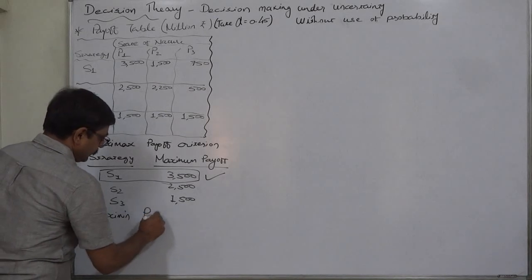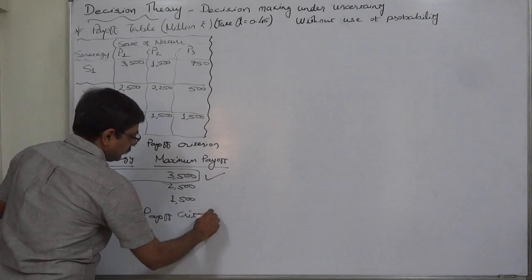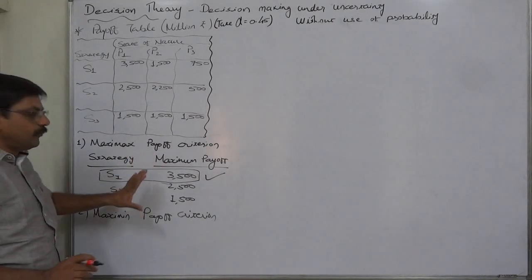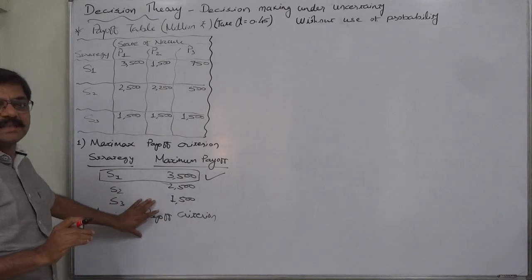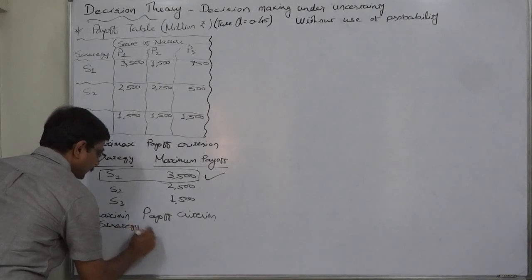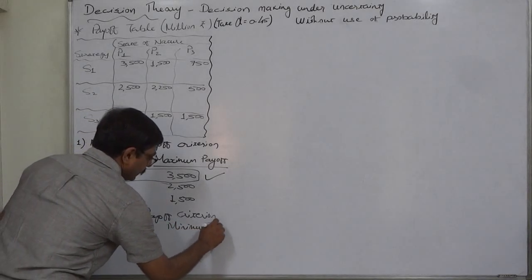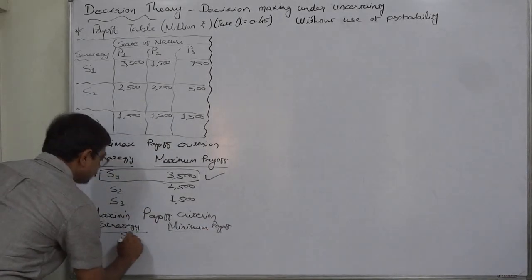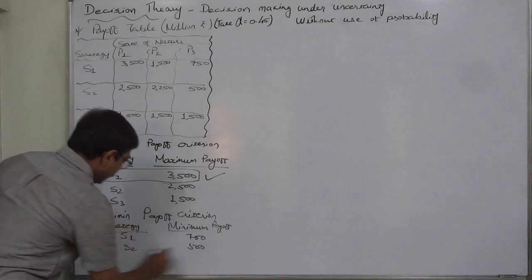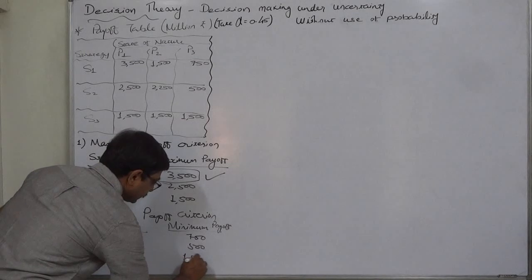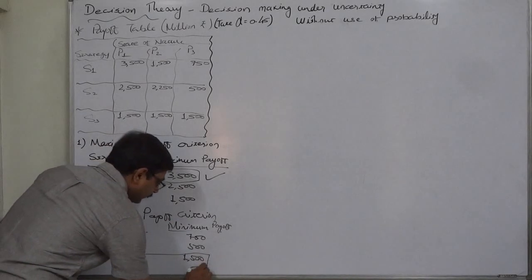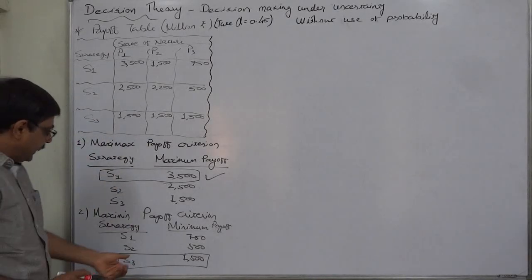Another criterion in case of payoff is the maximin payoff criterion — maximum of the minimum. This is called a pessimistic criterion where we assume minimum payoff is possible. In case of S1, the minimum is 750; in case of S2, minimum is 500; and in case of S3, minimum is 1500. The maximum of these minimums is 1500, and the corresponding strategy is S3. It is advisable for the decision maker to select strategy S3.